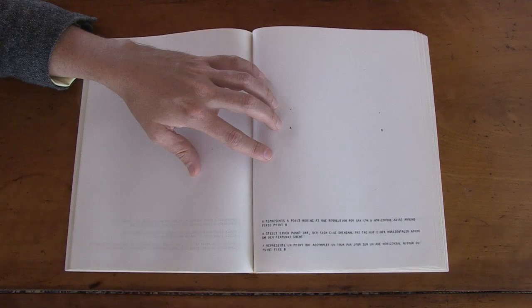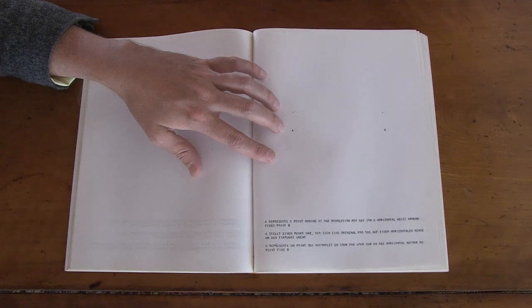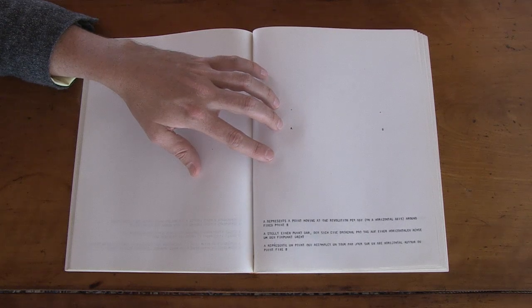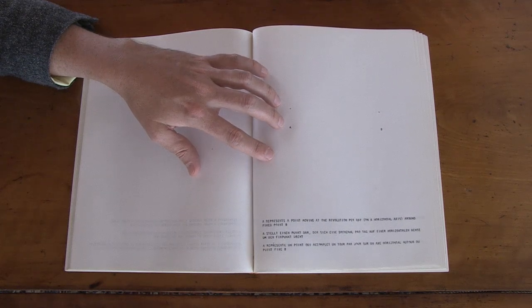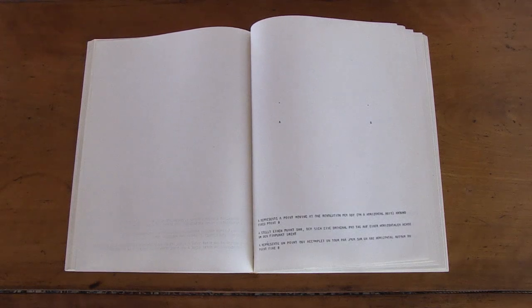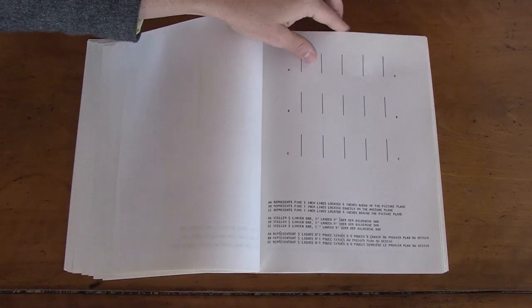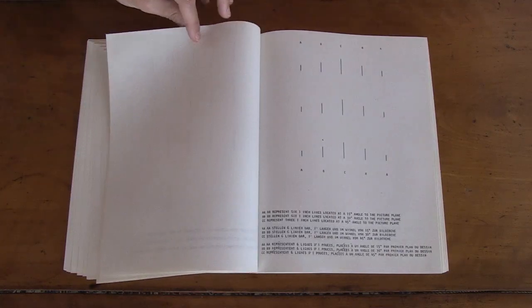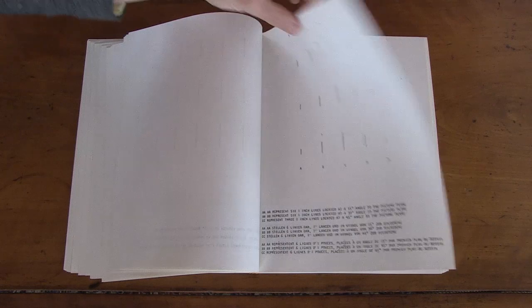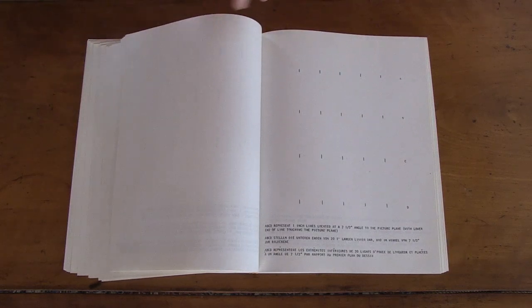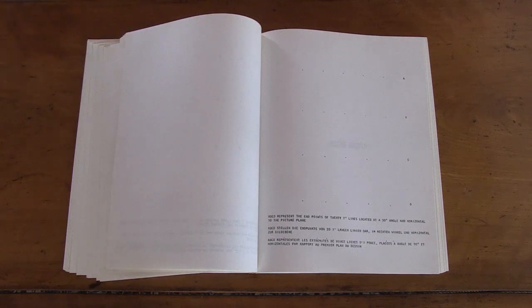Point moving at one revolution per day on a horizontal axis around fixed point B. I mean, that's amazing. There's time in there too. A day. That's extraordinary. Back in space to infinity. One inch ahead of the picture frame. Now we're moving out instead of back. A and B represent points located one inch ahead of the picture frame. That's an odd way of putting it. Don't forget how visual these things were.